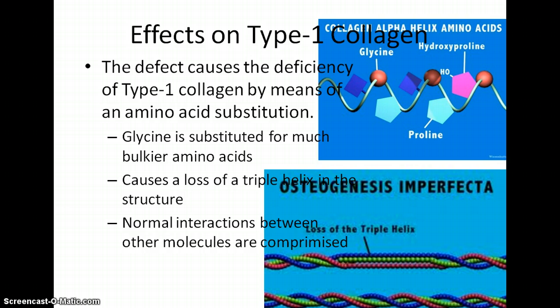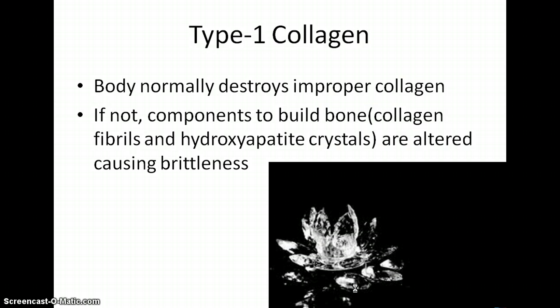All the way up, you have brittle bones and the effects of this disease. The top picture is a normal amino acid sequence, and the bottom picture shows the loss of the triple helix. Now, type 1 collagen, if it's improperly made, the body normally destroys it, but because this disorder has occurred, the improper collagen is used since the normal one can't be formed. So basically, the collagen fibrils and hydroxyapatite crystals are altered, causing the bone to be very brittle.